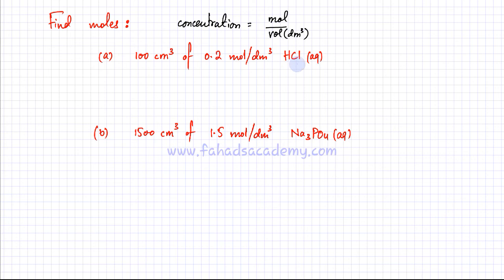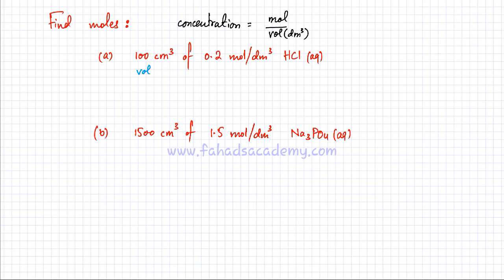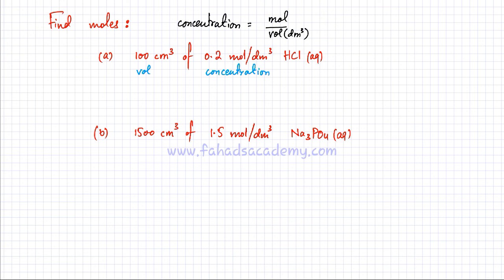The first question involves HCl(aq): 100 cm³ of 0.2 mol/dm³ HCl — find the moles. The unit cm³ tells us 100 is the volume, and mol/dm³ tells us 0.2 is the concentration. Knowing both volume and concentration of HCl, we can calculate moles.